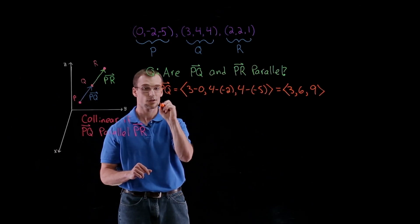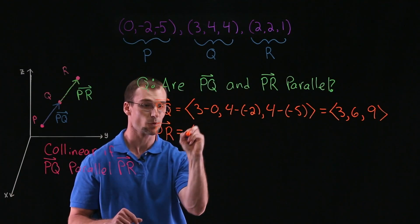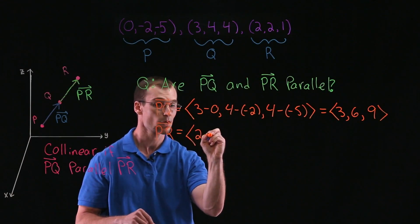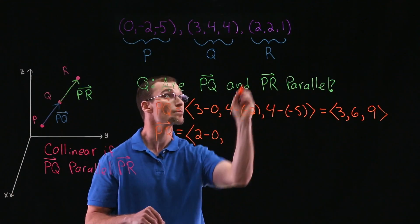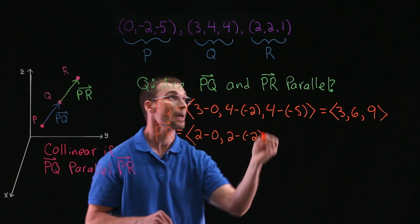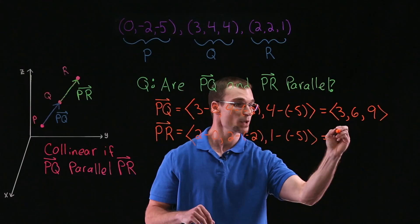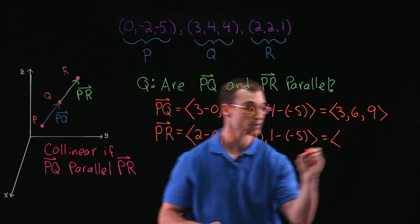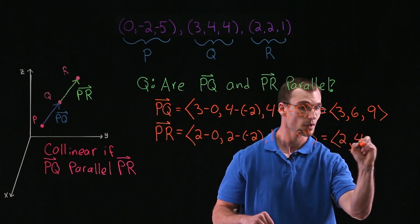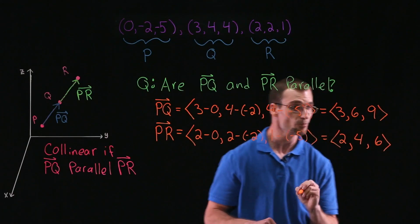And we'll find, similarly, our vector PR in component form. So subtracting, we're going to have first component 2 minus 0, 2 minus negative 2, and lastly 1 minus negative 5, which will give us components 2 minus 0 is 2, 2 plus 2 is 4, and 1 plus 5 gives us 6.